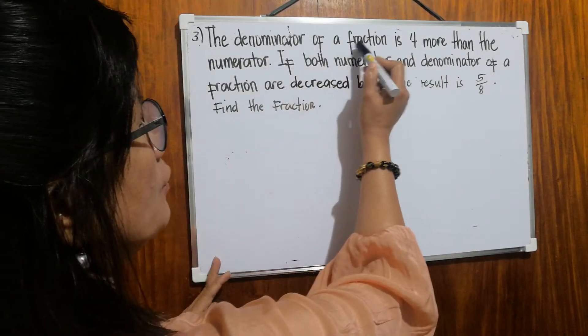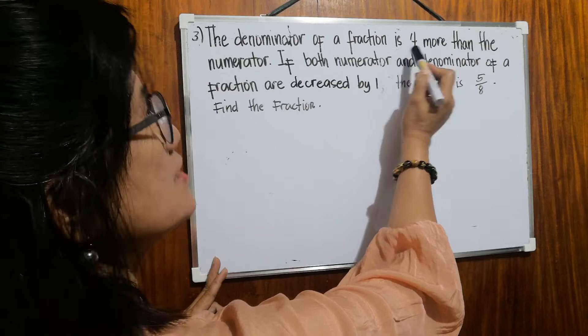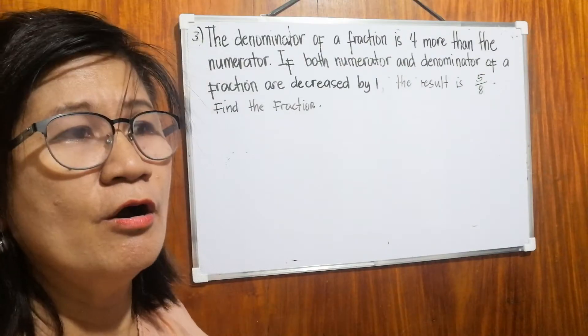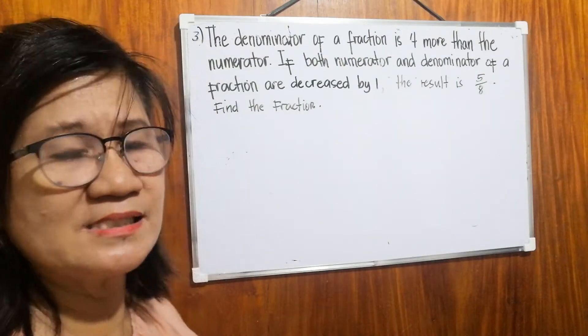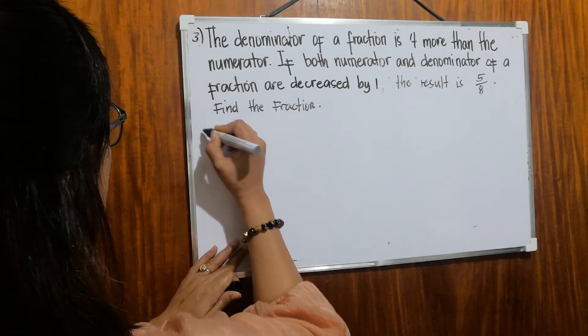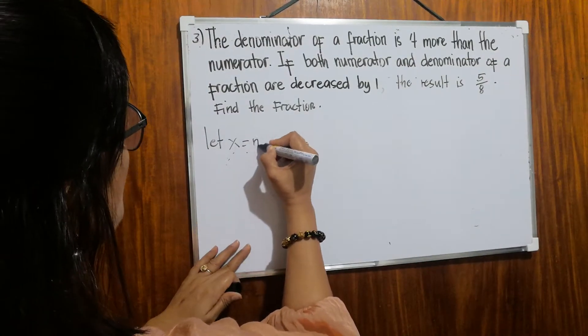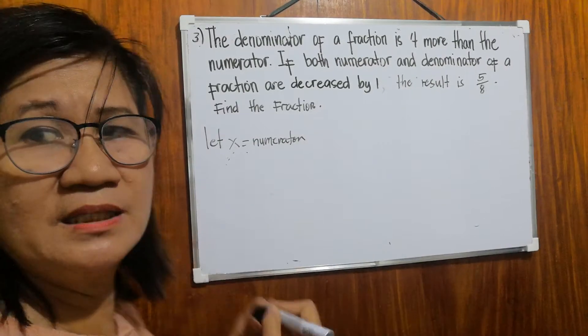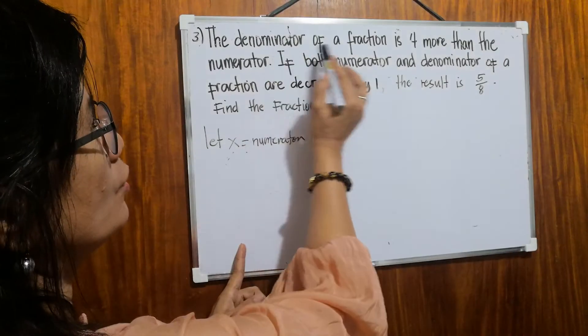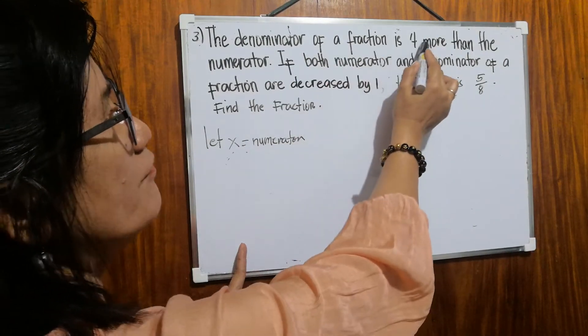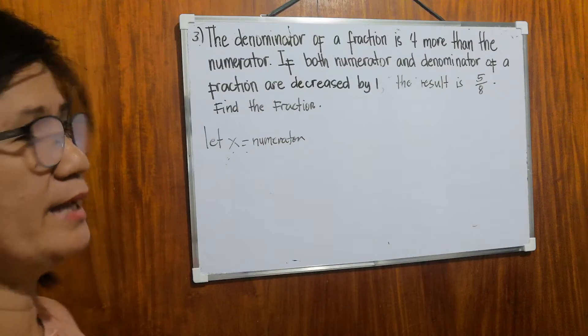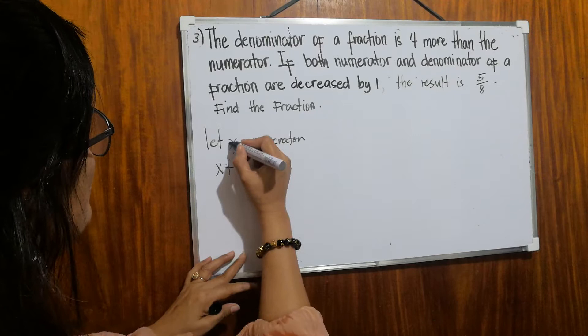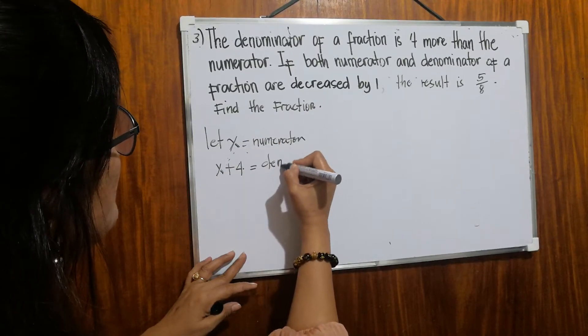If the denominator of a fraction is four more than the numerator, when we say four more than, that is addition, plus. Okay, let x be our numerator. How about the denominator? It says the denominator of a fraction is four more than. Four more than. So it will be x plus four. x plus four will be our denominator.